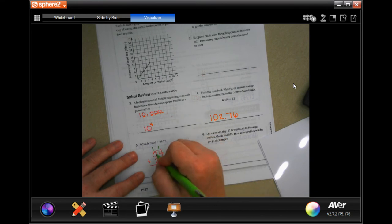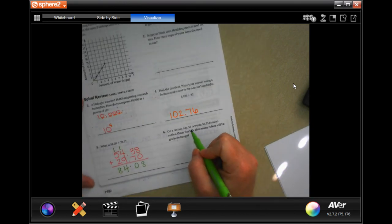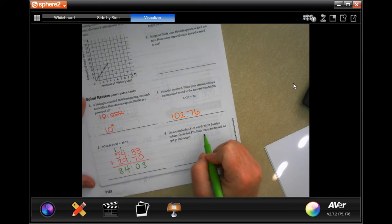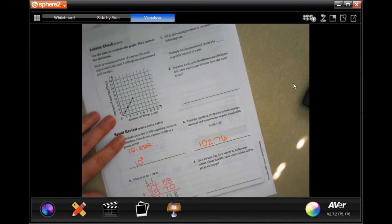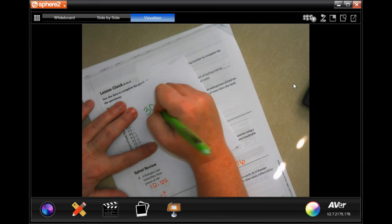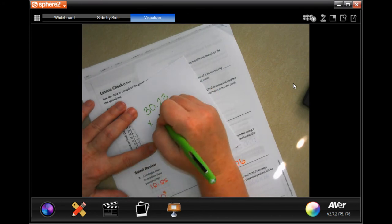On a certain day, one dollar is worth thirty point twenty-three Russian rubles. Omar has seventy-five dollars. How many rubles will he get in exchange? We're going to do thirty point twenty-three times seventy-five.